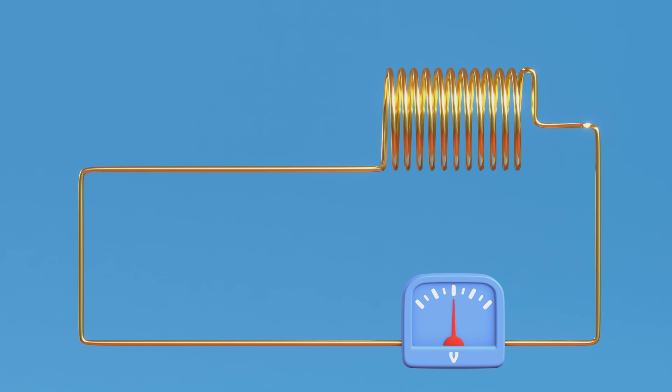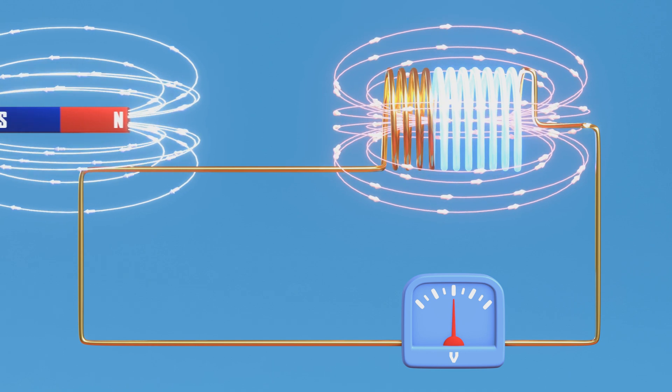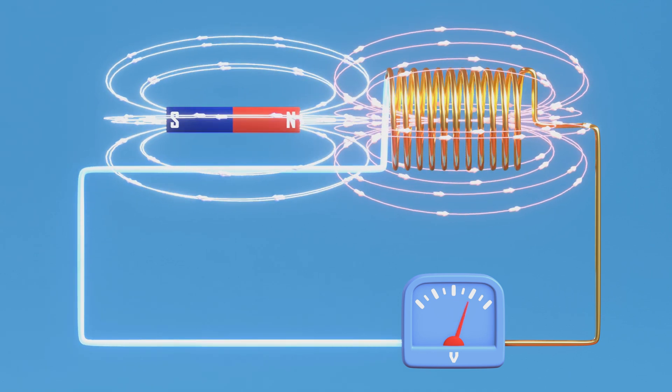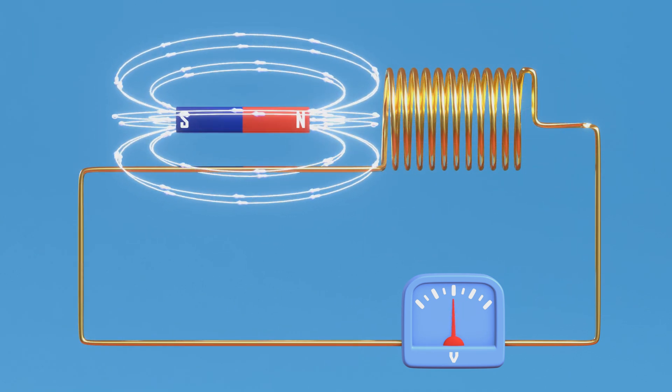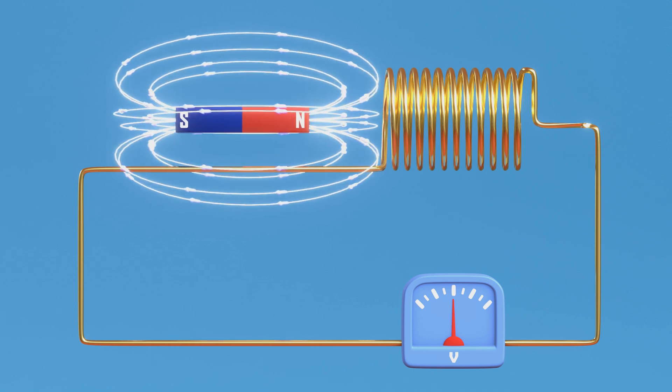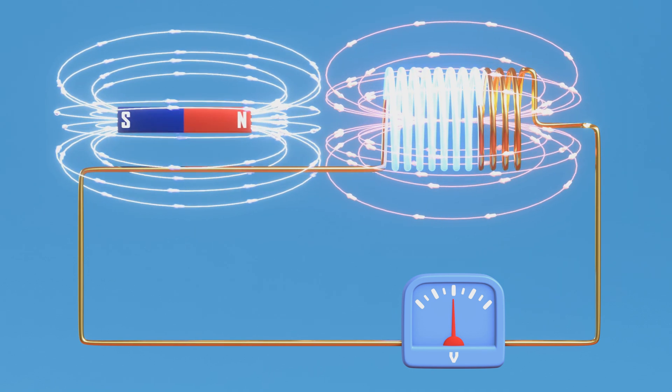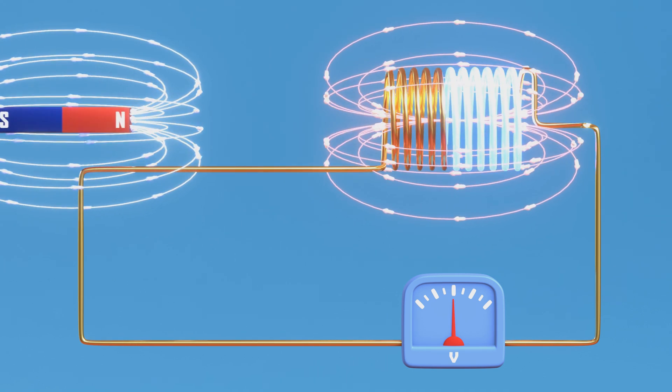Faraday's Law of Electromagnetic Induction explains that a change in the magnetic field around a wire coil induces an electromotive force, EMF, or voltage across the coil. This induced voltage can generate an electric current in a closed circuit.